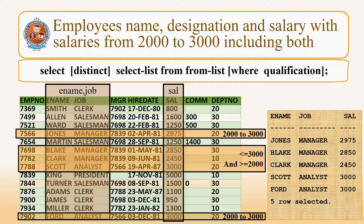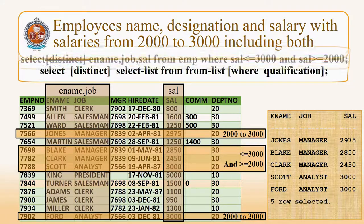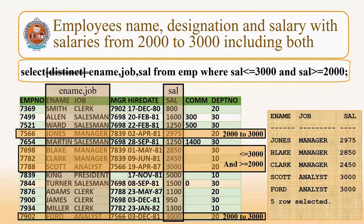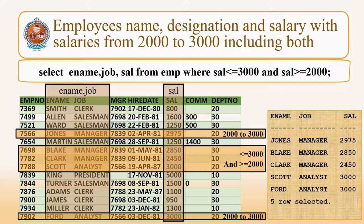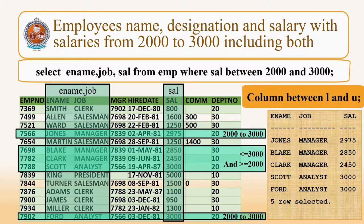Now the query is employee's name, designation, and salary with salaries from 2000 to 3000 including both values. That means the salary should be >= 2000 and <= 3000. You can also use the special operator BETWEEN AND instead of these two conditions: SAL BETWEEN 2000 AND 3000. That gives the column values between the minimum limit and maximum limit. Kindly observe the results in the PPT.